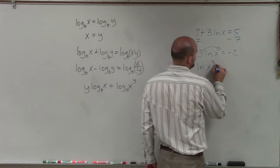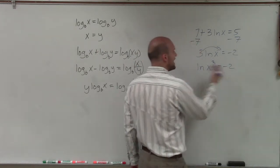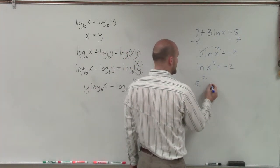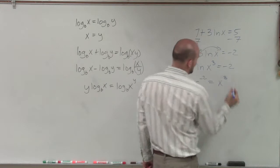Now what I can do is I can rewrite this in exponential form. So this would be e to the negative second power equals x cubed.